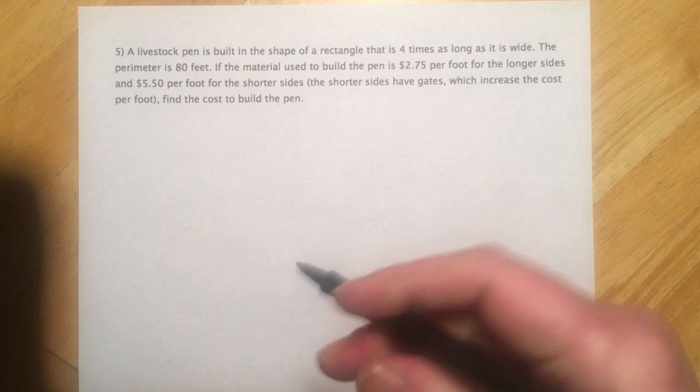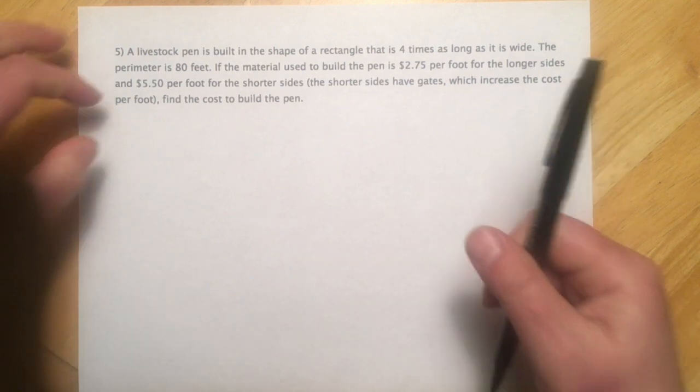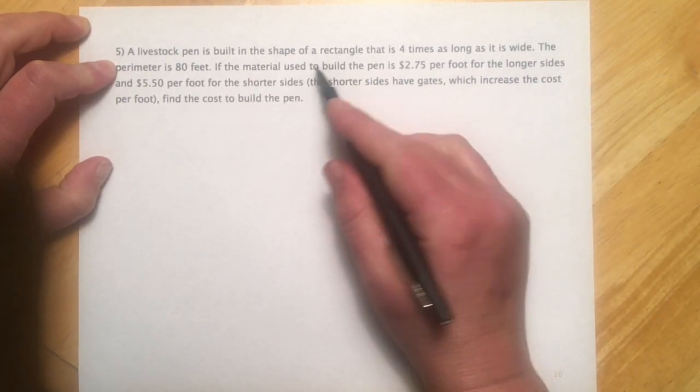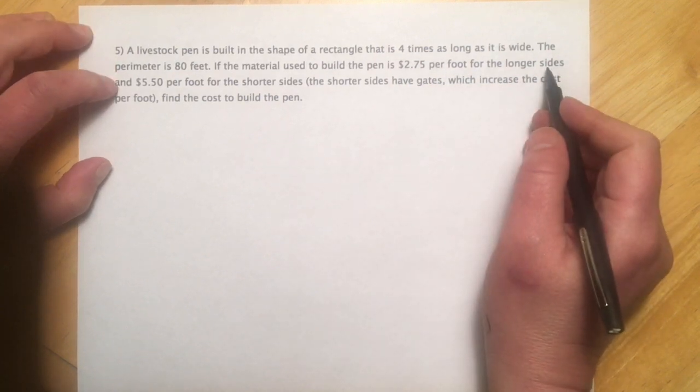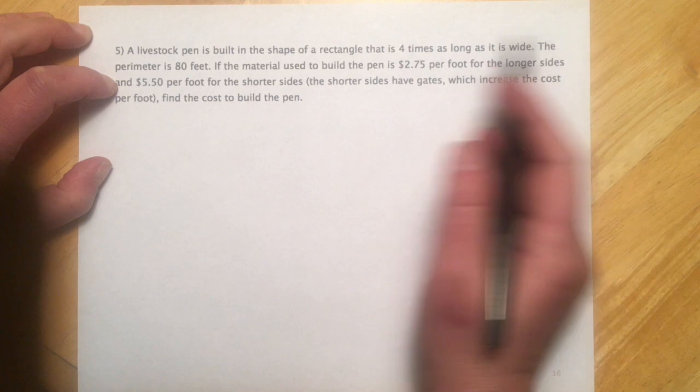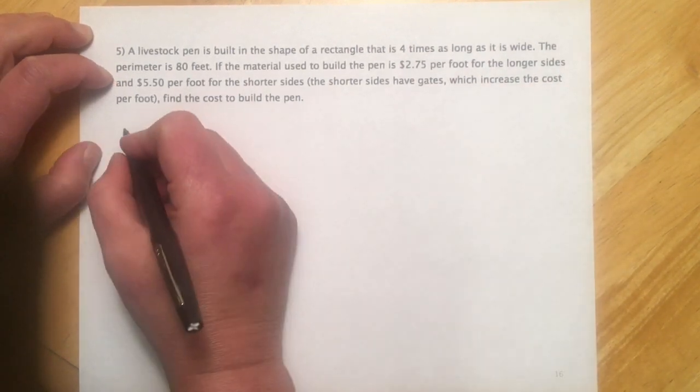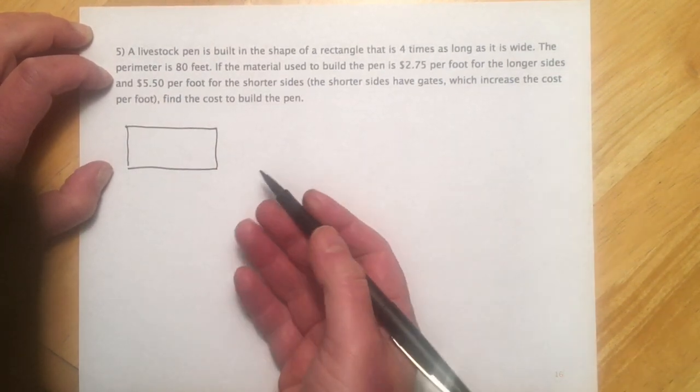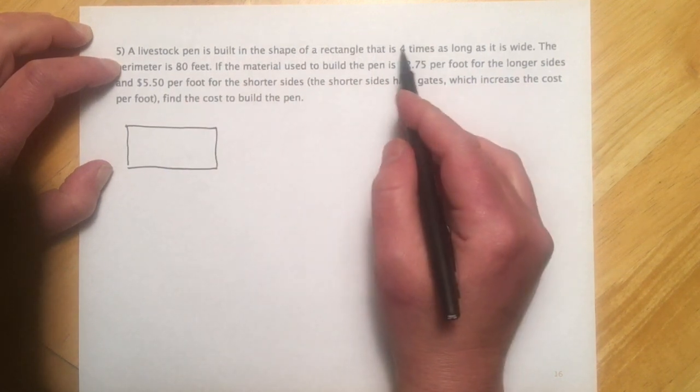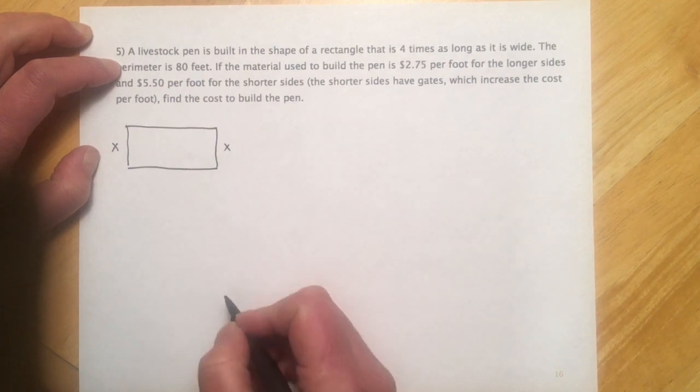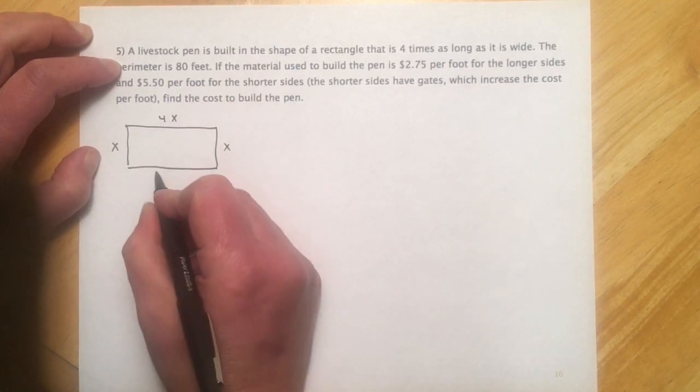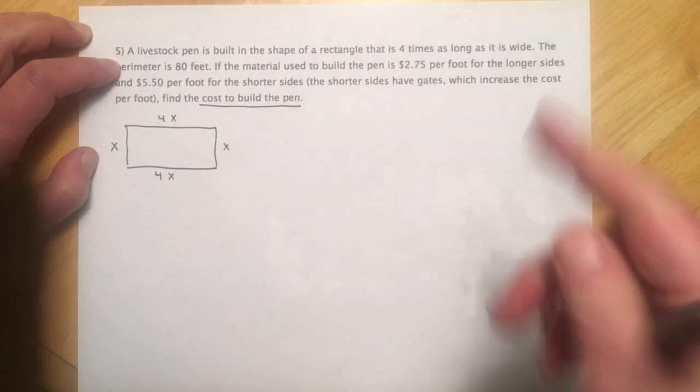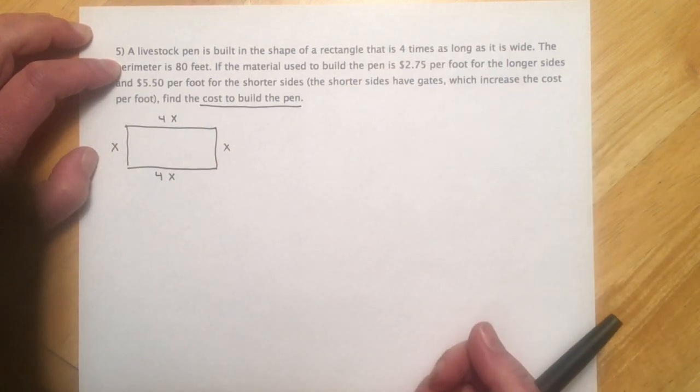This one's a variation on a geometry problem. A livestock pen is built in the shape of a rectangle that's four times as long as it is wide. The perimeter is 80 feet. If the material used to build the pen is $2.75 a foot for the longer sides, $5.50 a foot for the shorter sides, find the cost to build the pen. So it's helpful to draw what you're doing. So if I make the short sides x, then that means the long sides are 4x. Eventually I need to figure out the cost, but to do that I would need to know how long all these sides are. So it's basically just another perimeter problem.